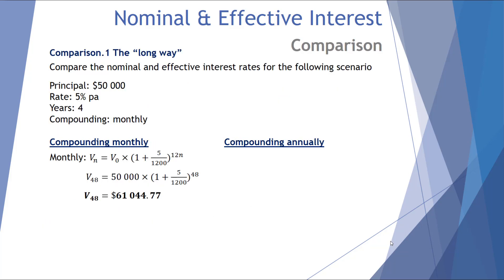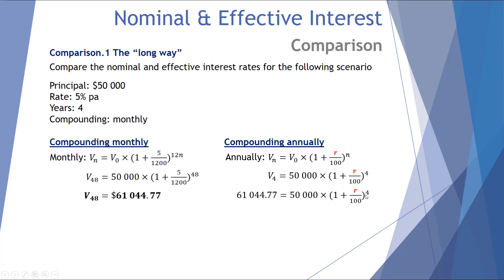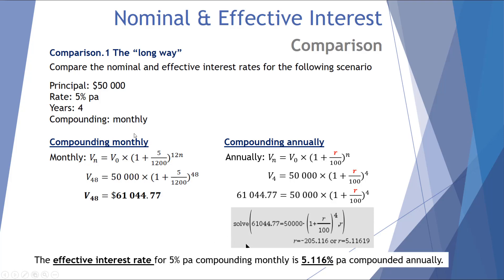Let's look at three ways to calculate the effective interest rate. The longest way: we know $50,000 at 5% per annum for four years compounded monthly returns $61,044.77. Substituting that into an annual equation to find the required annual rate, we find it requires an annual interest rate of 5.11619% per annum. So the effective interest rate for 5% compounding monthly is 5.116% per annum compounded annually.